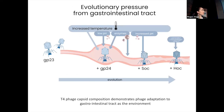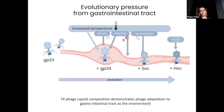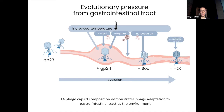On this slide we have a small summary of part one. This figure shows evolutionary pressure from the gastrointestinal tract in terms of increased temperature, low pH, enzymes, increased pH, and other factors. This pressure leads from the primitive stage of T4 phage without any special proteins, up to more complex T4 phages with proteins like GP24, SOC, and HOC. This demonstrates that T4 phage capsid composition reflects phage adaptation to the gastrointestinal tract as an environment.